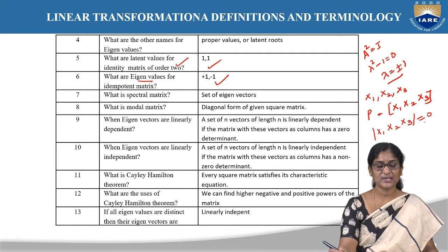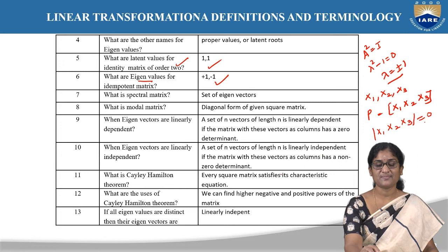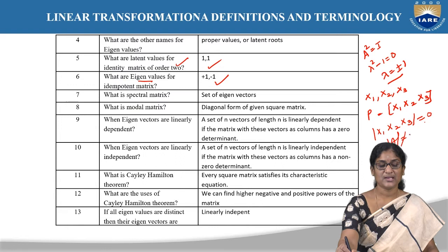When are eigenvectors said to be linearly independent? A set of n vectors is linearly independent if the matrix with these vectors as columns has a non-zero determinant. If the determinant is not equal to 0, then you call these independent eigenvectors.